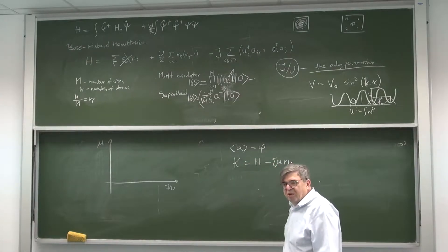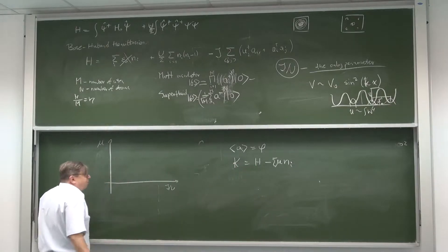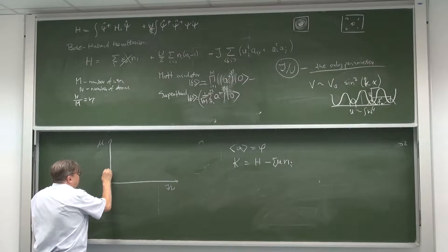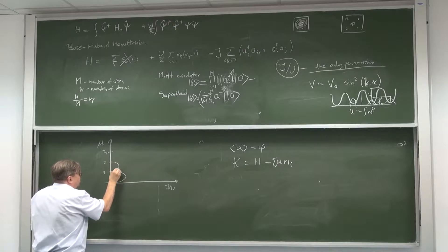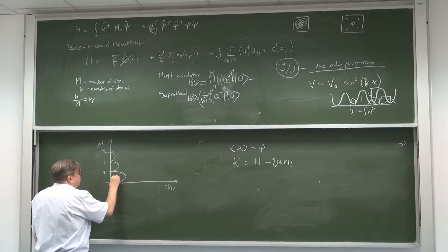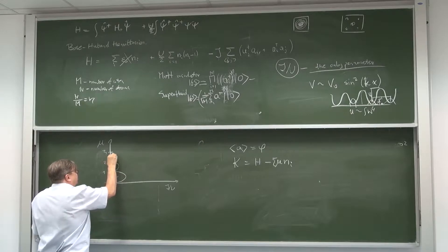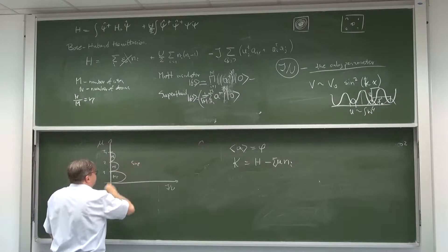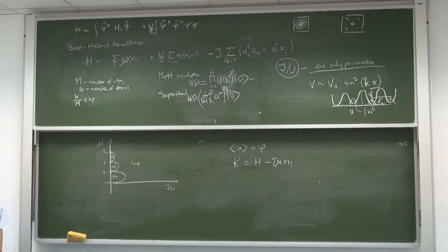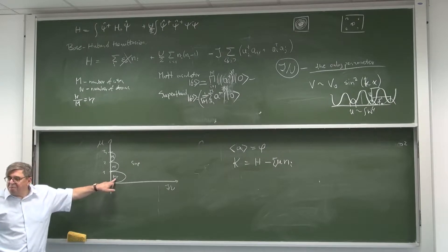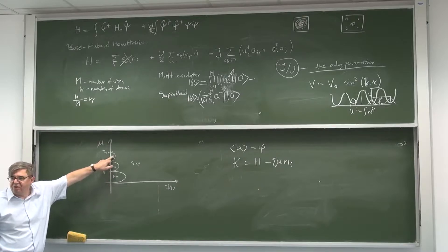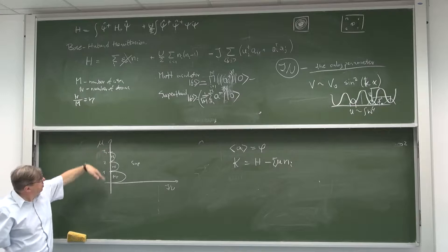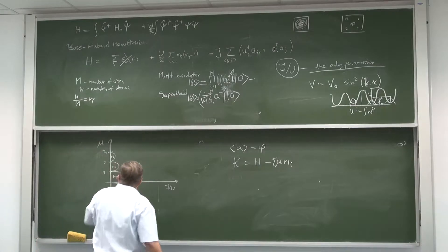For the system with translational symmetry you don't expect that this depends on site. But there is this mean field which appears. When you have the superfluid, it means there is some order parameter. This mean field wave function which appears over the lattice, and in order to do this you break symmetry. So you consider the Hamiltonian which was the original one minus mu times n, just to fix mu to keep constant number of particles. The phase diagram looks like this: this is Mott insulator phase, and this is superfluid phase.